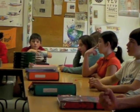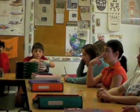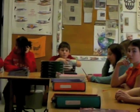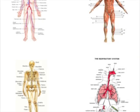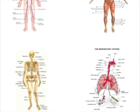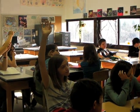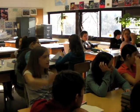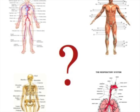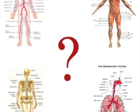This 7th grade Life Sciences class is learning about human anatomy. After studying about the different systems in the body last week, the teacher noticed that the students could easily describe each in isolation. They struggled, however, to find connections among these systems.